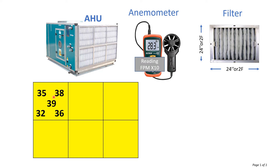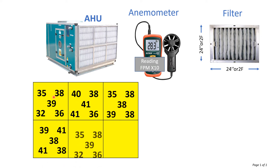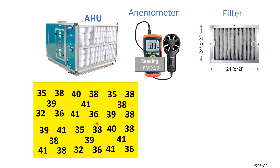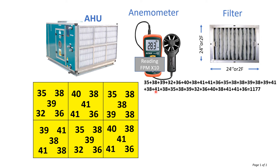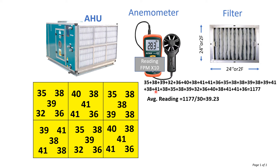Repeat the same procedure for all the filters like this. Add all the readings you have calculated. To calculate the average reading, we divide the total by the number of readings. The total summation of the readings is 1,177 and the number of readings is 30, so the average reading is 39.23.